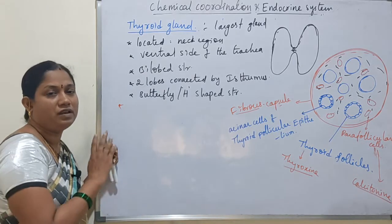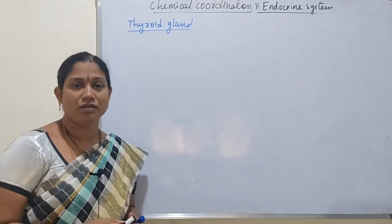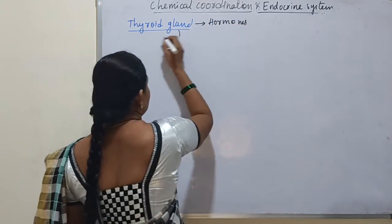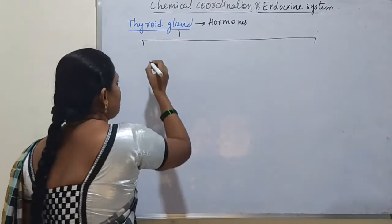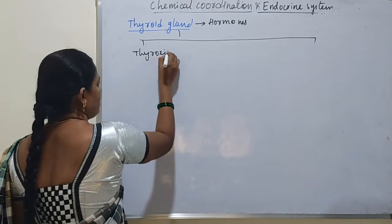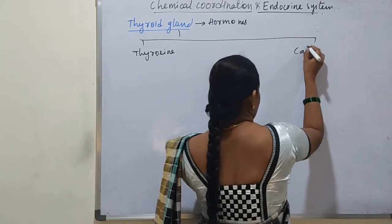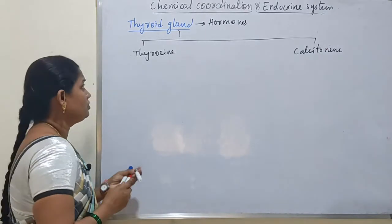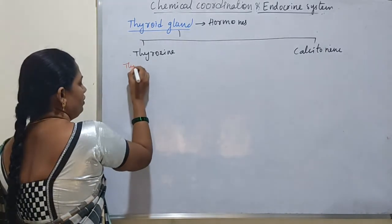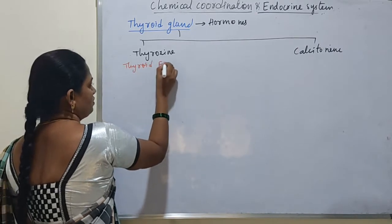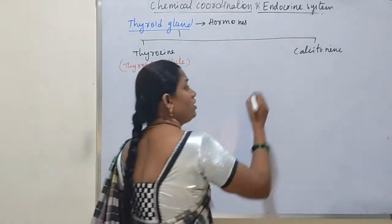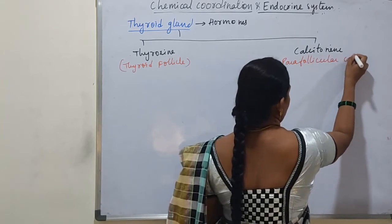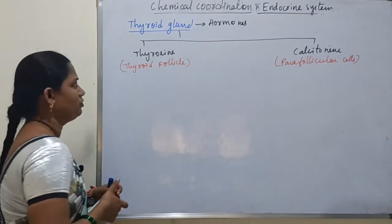The hormones of the thyroid gland: it secretes two hormones. First is thyroxine hormone, secreted by the thyroid follicles. Second is calcitonin hormone, secreted by the parafollicular cells.